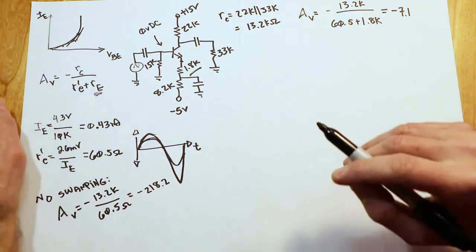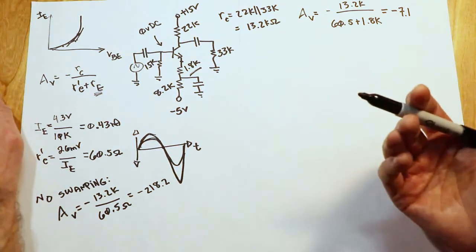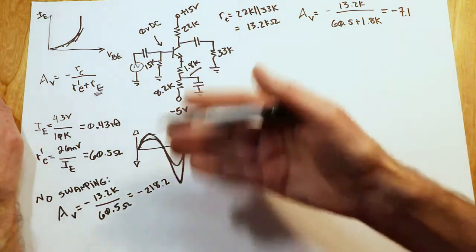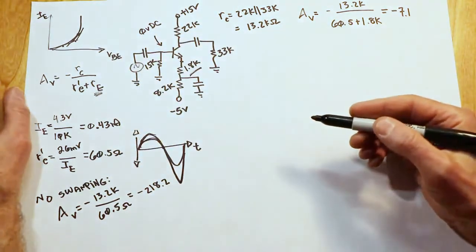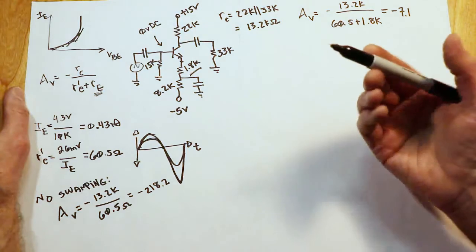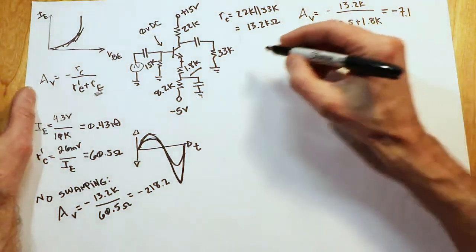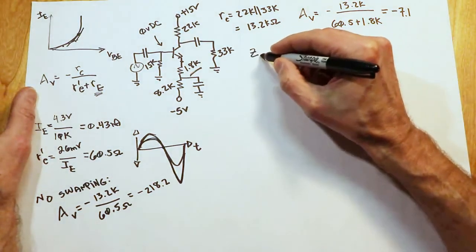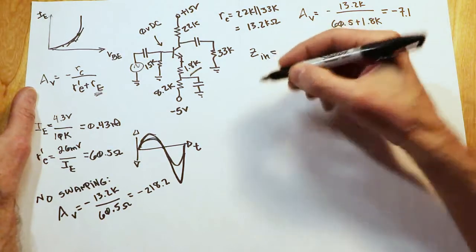Now, the other thing that we mentioned was the effect on the input impedance. So we've seen gain, at least mathematically we've seen the effect of distortion. But what about the input impedance? So the general formula for input impedance, Zn, is two parts.